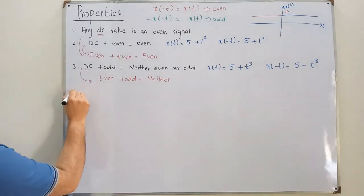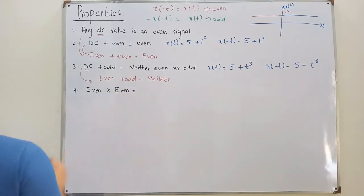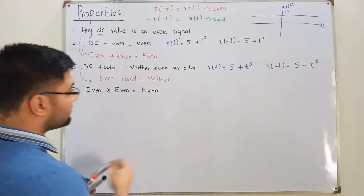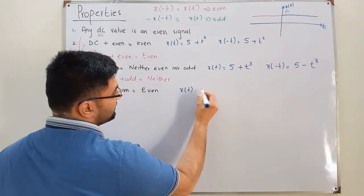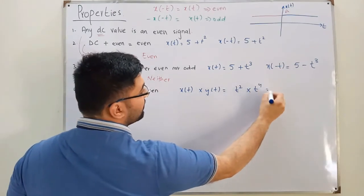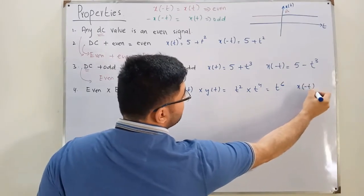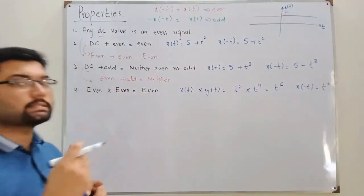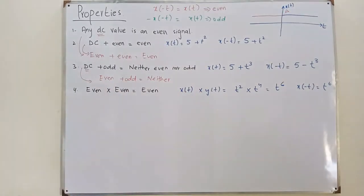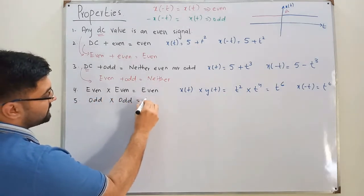The fourth property: even multiplied by even is even. If we have X(t) = t² and Y(t) = t⁴, multiplying gives t⁶. Now X(-t) = (-t)⁶ = t⁶, since negative one to an even power is positive one. So X(t) equals X(-t) — it's even.